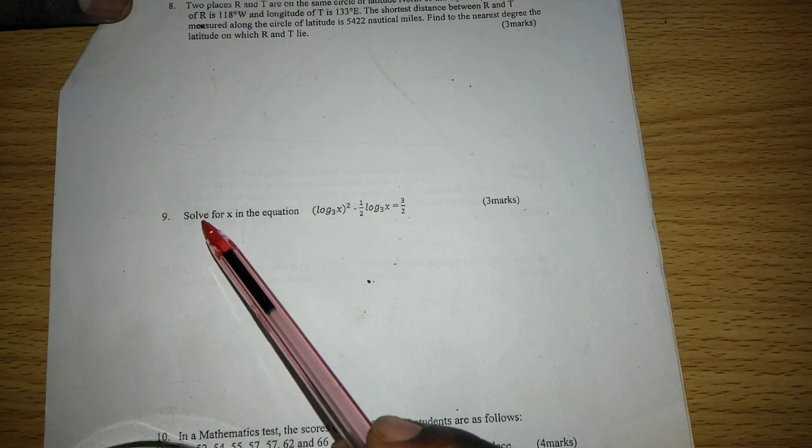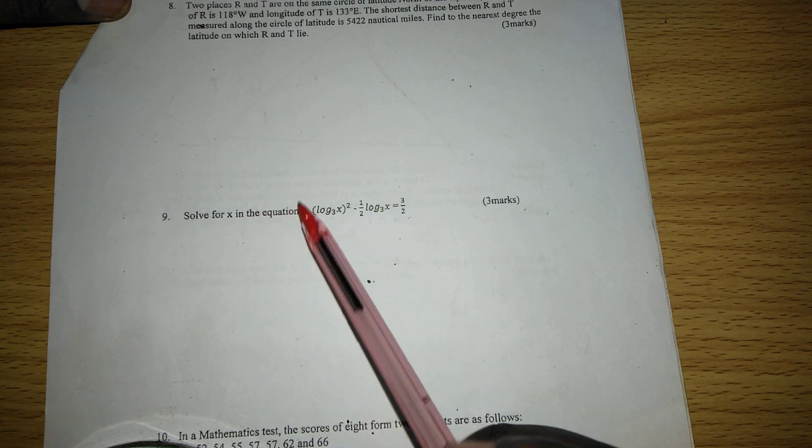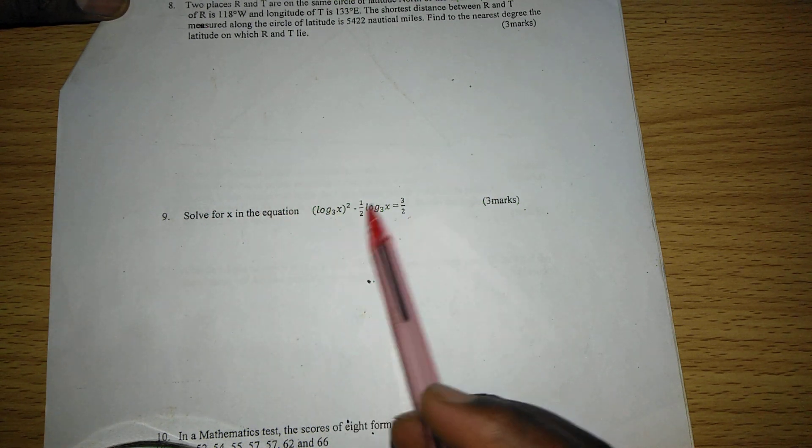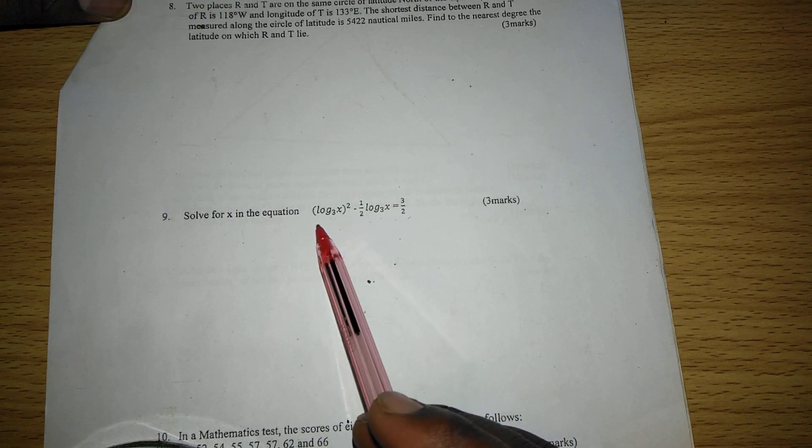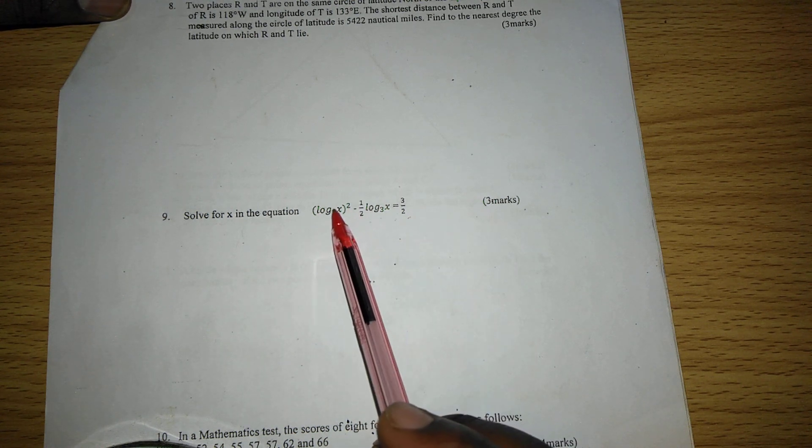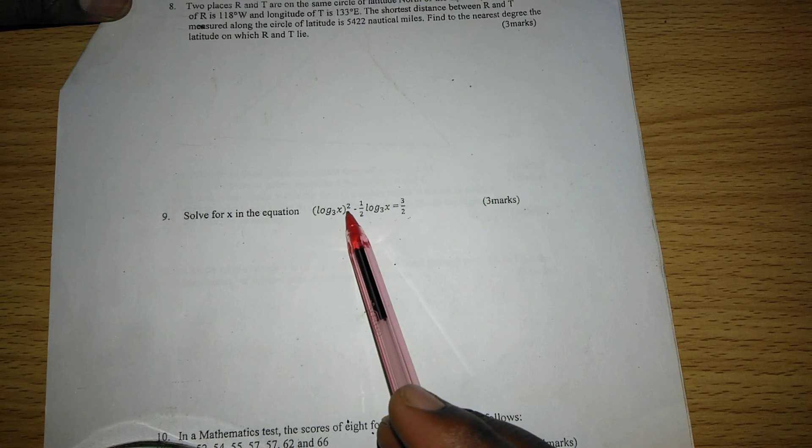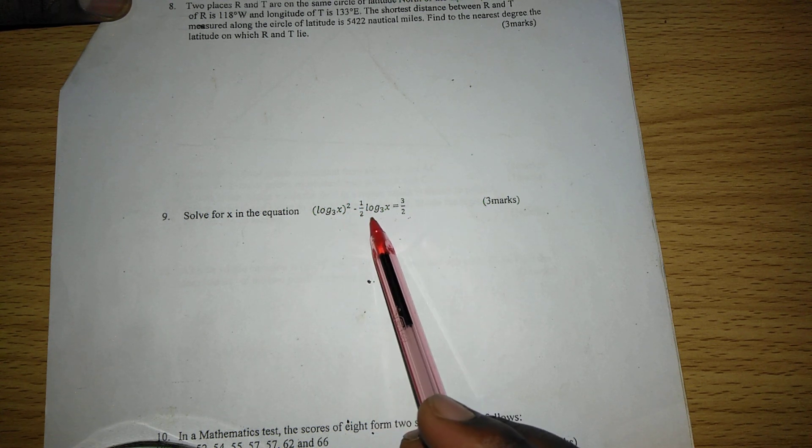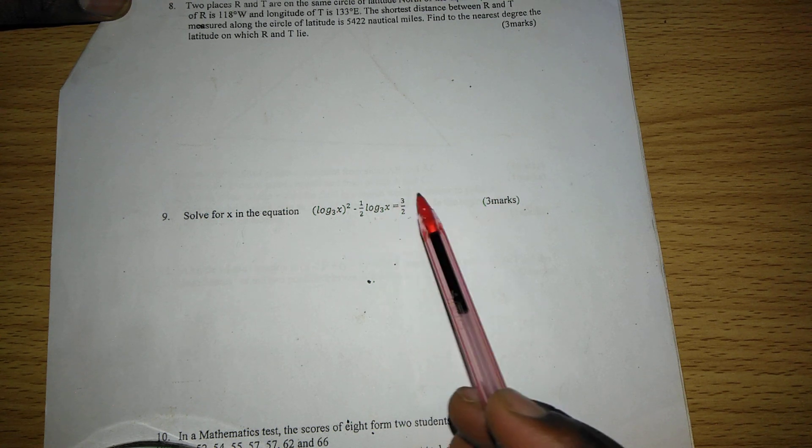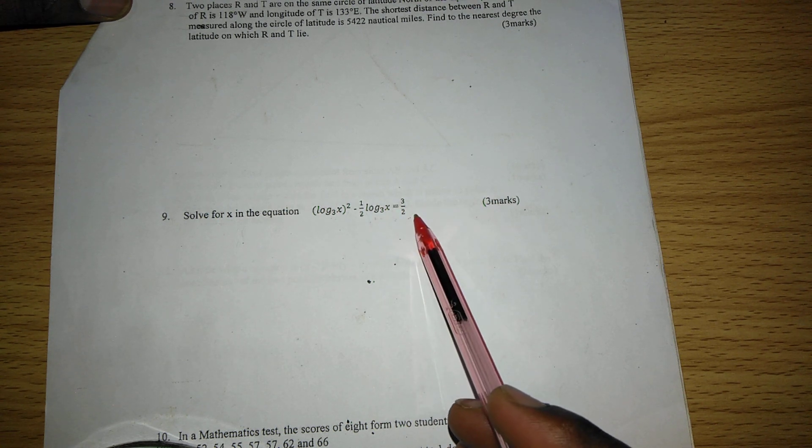The question is on logarithms, and we are told to solve for x in the equation shown here. We have a logarithmic equation which says the logarithm of x to base 3 squared minus half the logarithm of x to base 3 equals 3 out of 2.